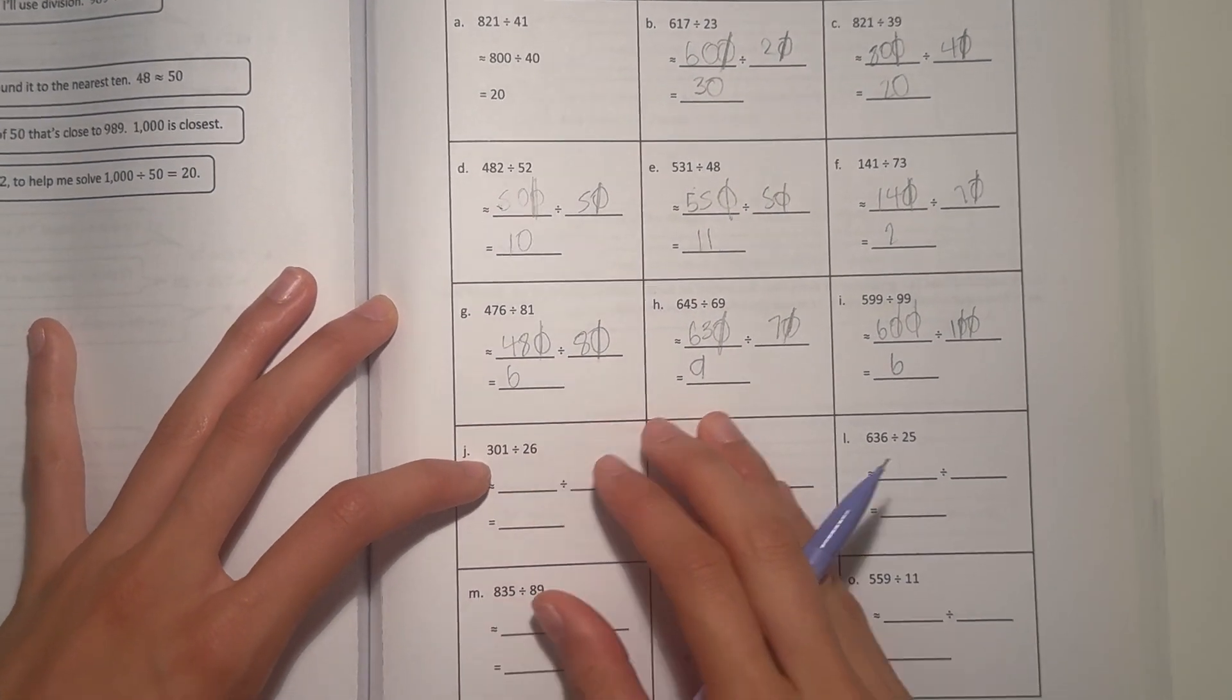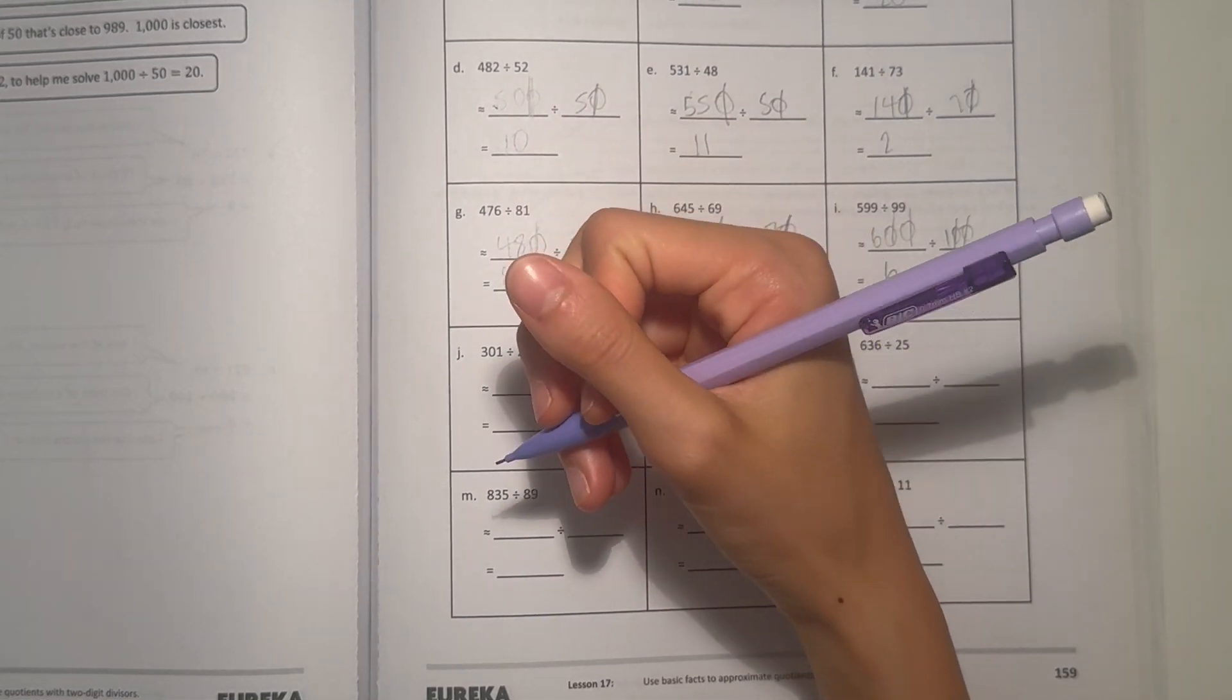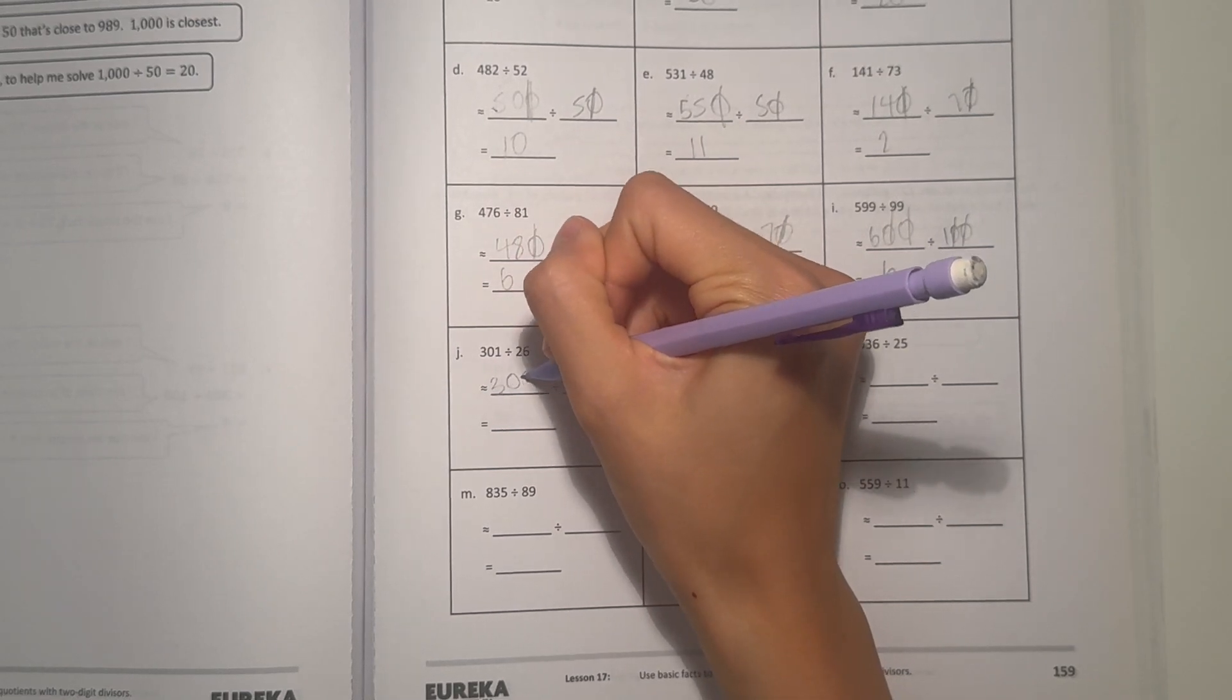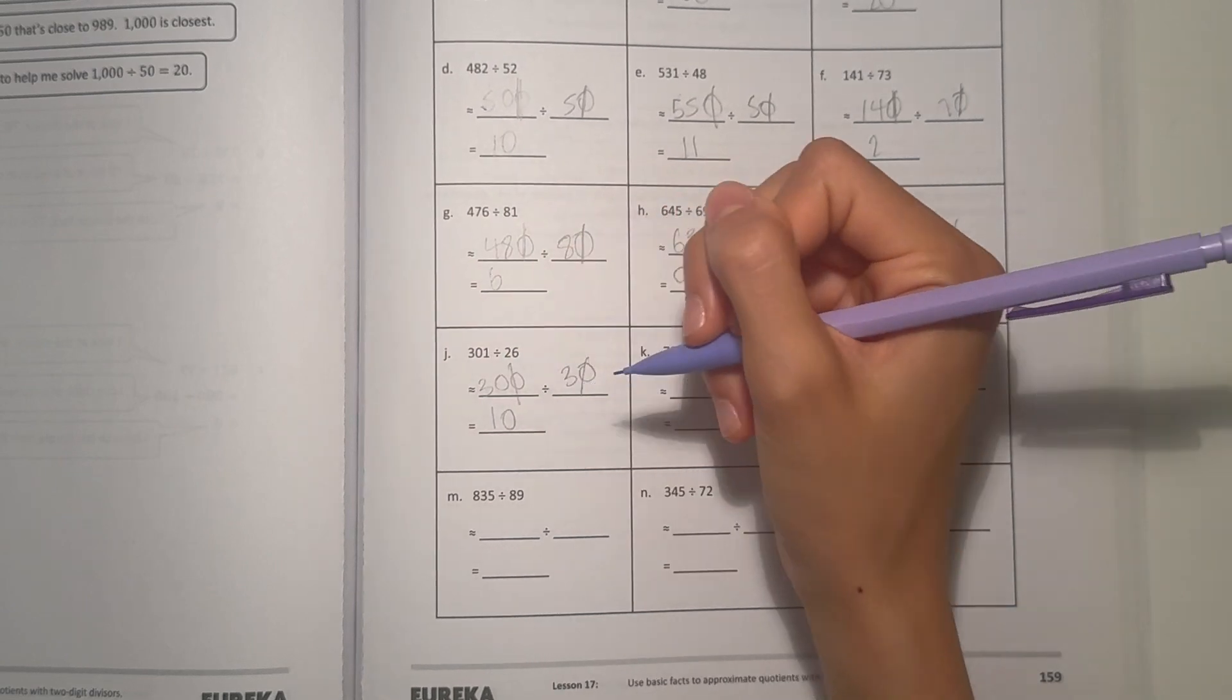J, 301 divided by 26. Let's see, 26 we can round to 30. 301 is just 300. Cross off the zeros. 30 divided by 3 is 10, so 10 is our estimate.